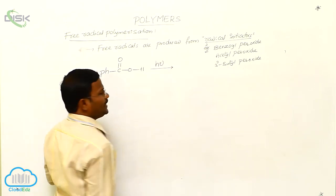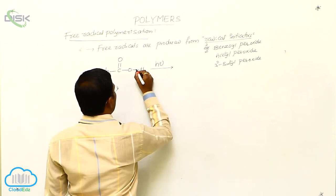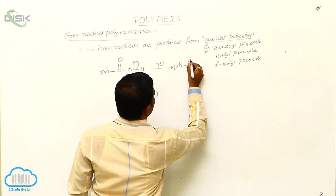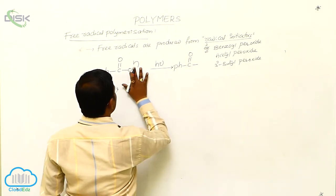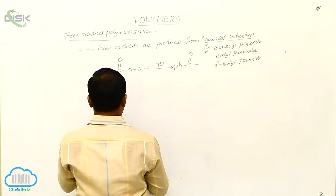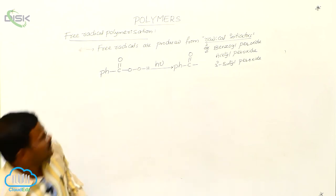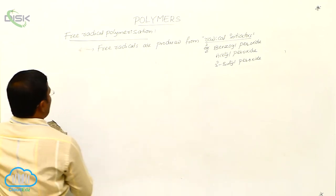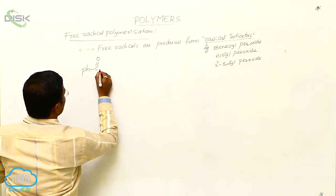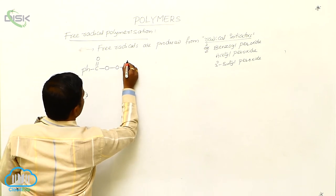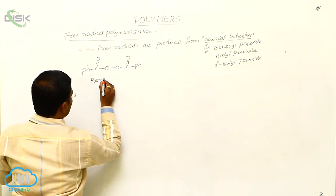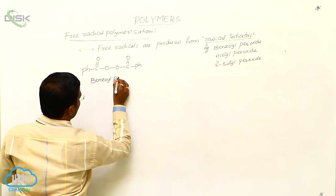Here, hν indicates sunlight. In the presence of sunlight, homolytic cleavage of the oxygen-oxygen bond in benzoyl peroxide takes place. Benzoyl peroxide has the structure: Ph-C(=O)-O-O-C(=O)-Ph. This homolytic cleavage produces Ph-C(=O)• free radicals, which then participate in the polymerization.